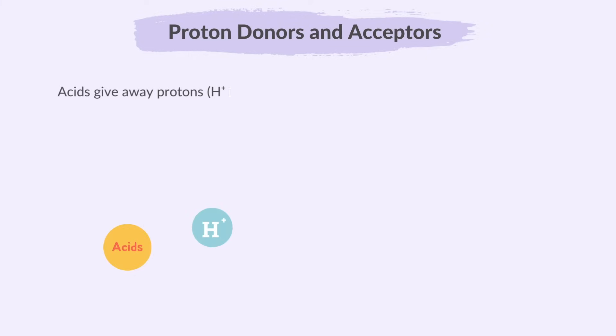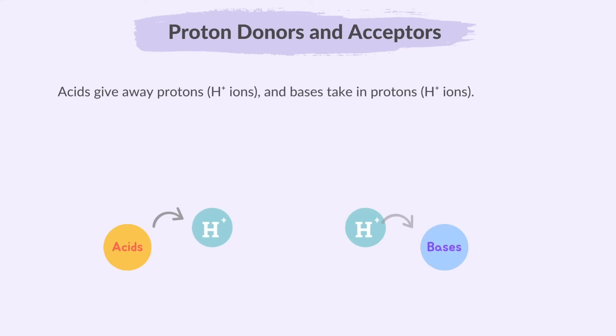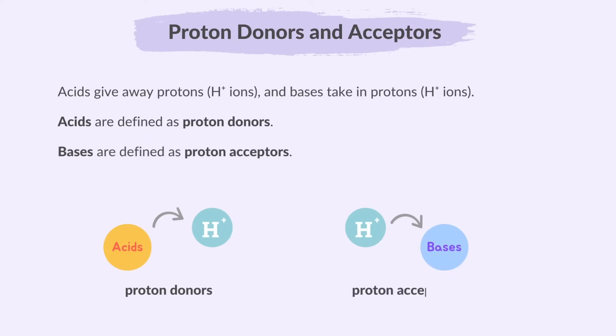Acids give away protons or H⁺ ions, and bases take in protons or H⁺ ions. So acids are defined as proton donors and bases are defined as proton acceptors.